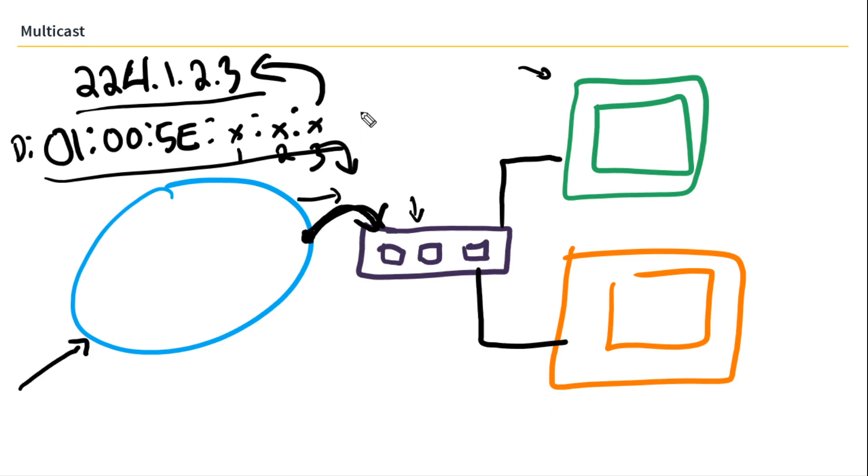Because no device has that MAC address as their source, that MAC address does not exist in the MAC address table on this switch. And what is the switch's default behavior when it receives a frame that it doesn't know the destination to? It sends it out every port in the same VLAN.